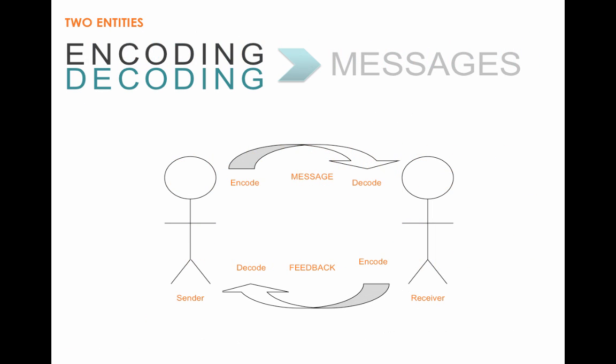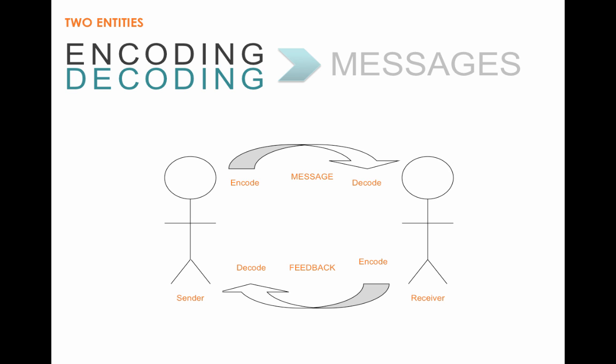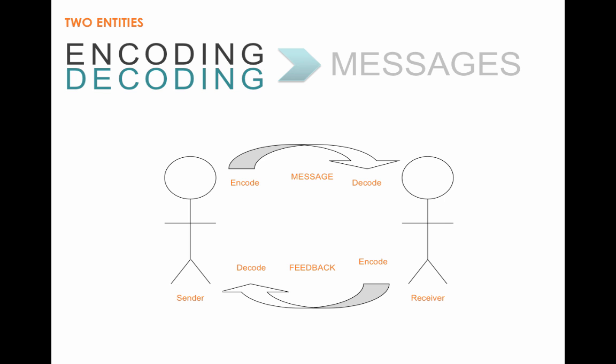If we had to draw a picture of this, it would look something like this. We have two entities — a sender and a receiver. The sender has an idea in their brain, and in order to get it out they have to encode that message into words. They send that message to the receiver, who hears the words and decodes the message, creating meaning from those words. The receiver also gives the sender feedback, encoding it both verbally and non-verbally and sending it back. They keep encoding and decoding messages back and forth.